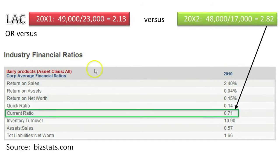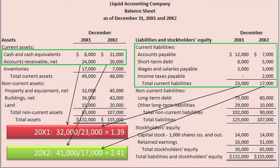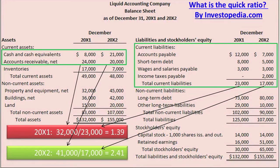In the BizStats table for the dairy products industry, the average Quick Ratio was 0.14 compared to the average Current Ratio of 0.71. Because the dairy industry's Quick and Current Ratios are so different, it appears that a significant amount of the dairy industry's current assets are tied up in inventory. If you are interested in learning more about the Quick Ratio, feel free to watch the Investopedia.com video titled, 'What is the Quick Ratio?'